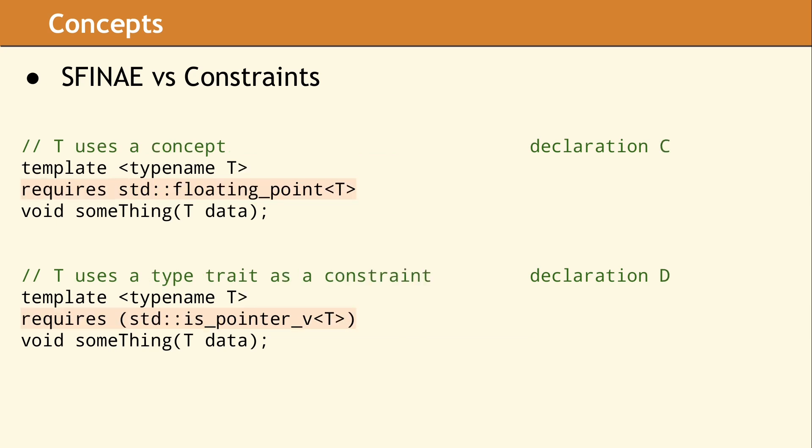This code does the exact same thing. However, now we are using constraints. The first thing you may notice is the code is easier to read and the condition for each template overload is clear. Declaration C uses a requires clause to specify that T must satisfy the std::floating_point concept for this template function to be callable. This happens to be a concept which is provided by the standard library. Declaration D uses a type trait as the expression for a requires clause. The type trait std::is_pointer_v must return true for this overload to be callable. Since this clause is not referring to a concept, the expression must be enclosed in parentheses. It is important to point out there are no parentheses in the constraint in declaration C.